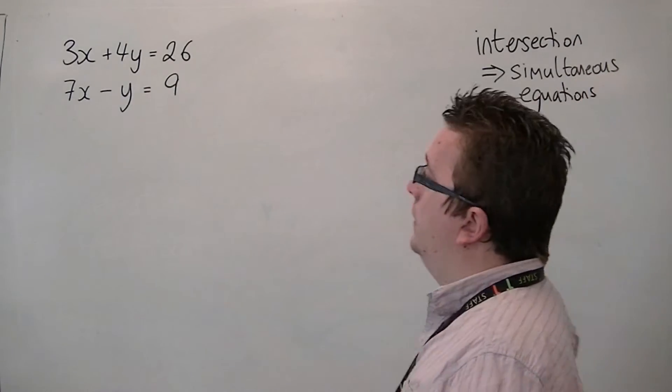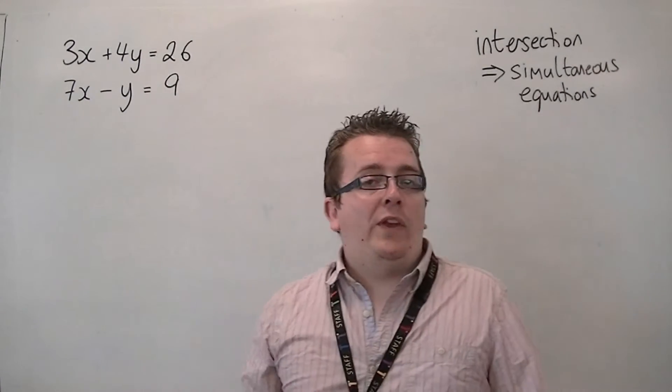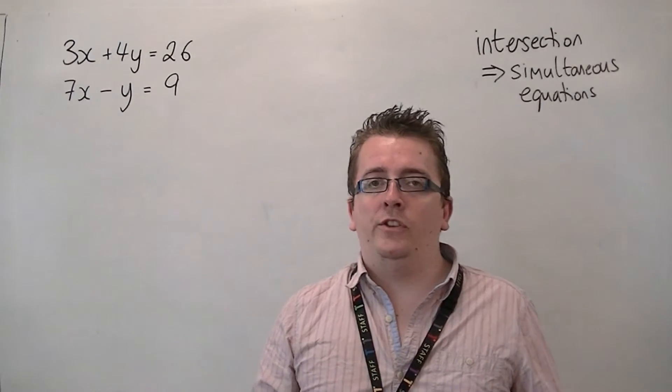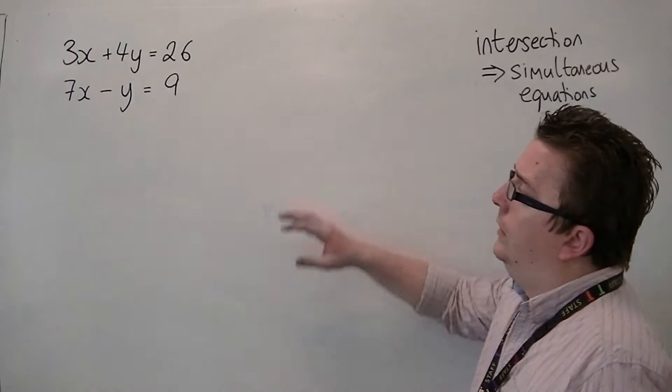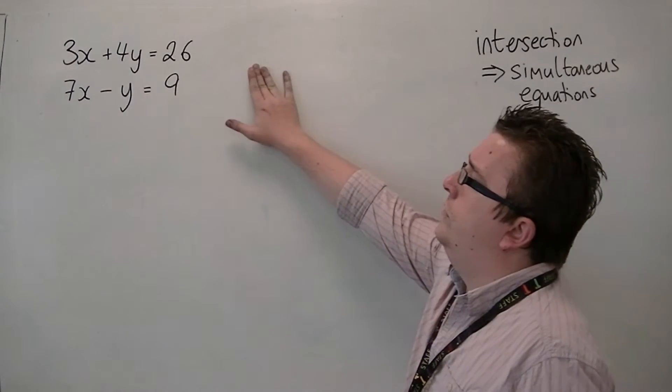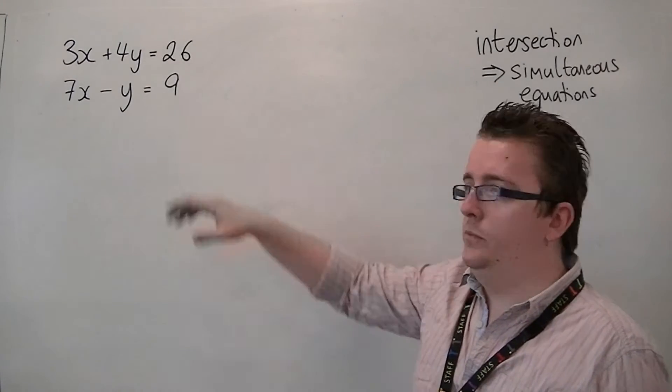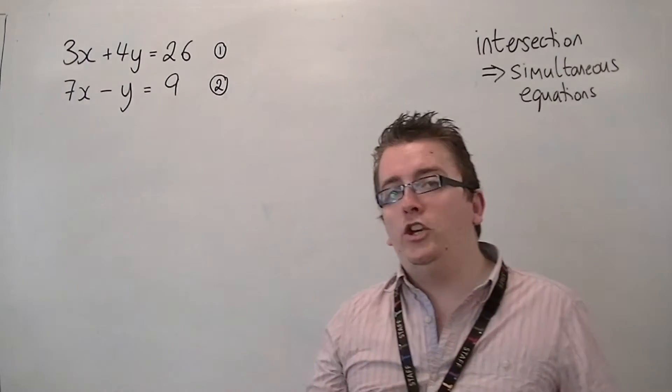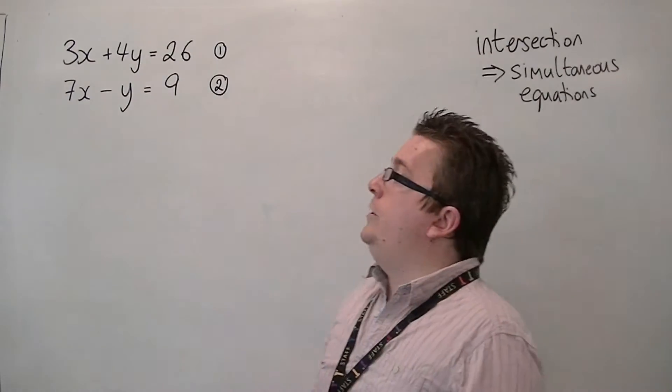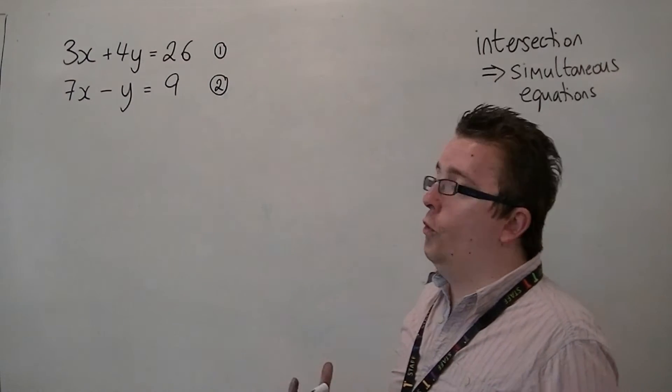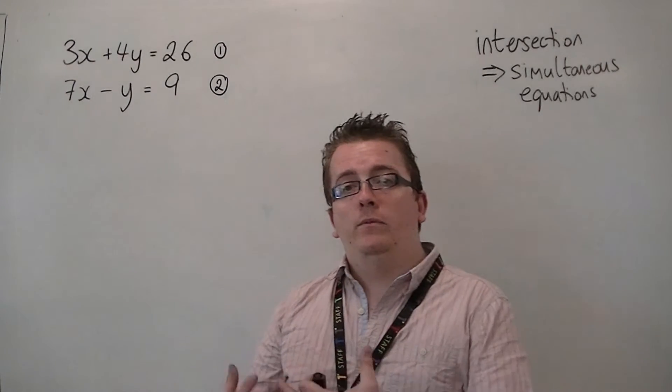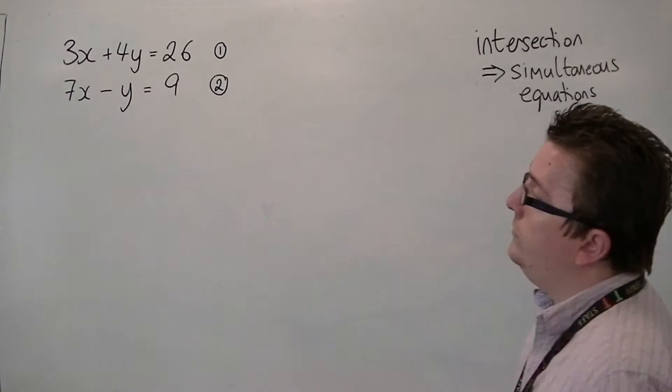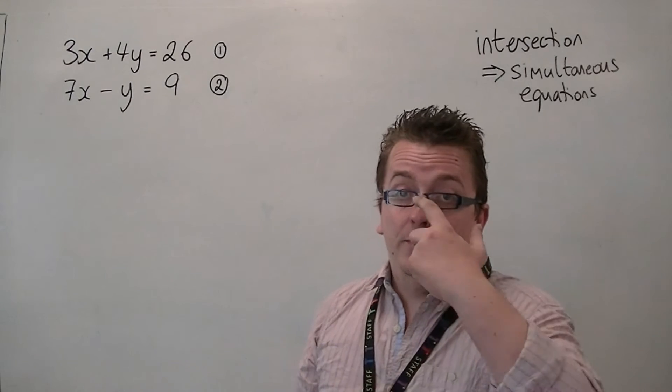So simultaneous equations isn't something new. You will have looked at this at higher GCSE. So if we're going to use simultaneous equations on these two, they are currently in the format where we would use what is called the elimination method, where we choose to eliminate either the x's or the y's in order to then work out the value of both x and y. So I'm going to use the elimination method to do this.